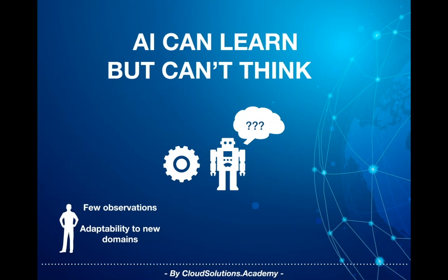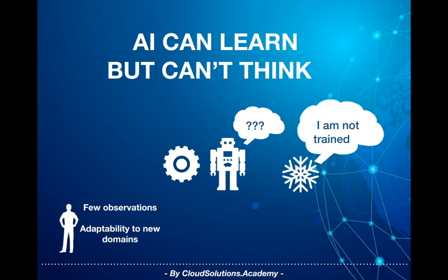Human intelligence, with only a few observations, can learn, think, and apply that learning across different domains quite easily. Take a simple example: a doctor treating cancer patients can give you advice for the common cold, but an AI system trained specifically for cancer may not even understand what common cold means, let alone provide treatment options.